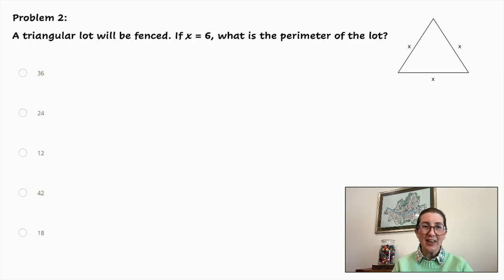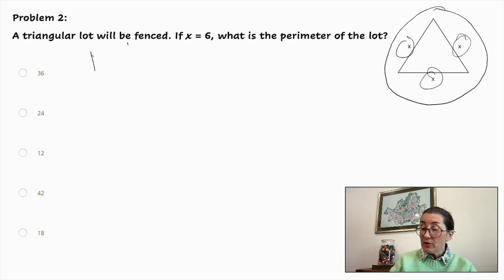Problem number two. A triangular lot will be fenced. If X equals 6, what is the perimeter of the lot? So this is a visual of our lot. It is an equilateral triangle, and so all of the sides are congruent.